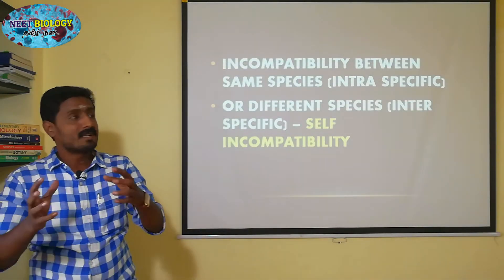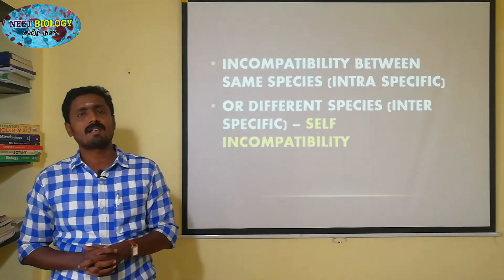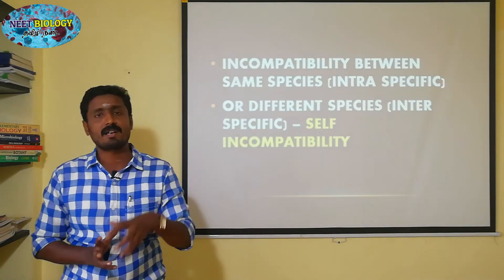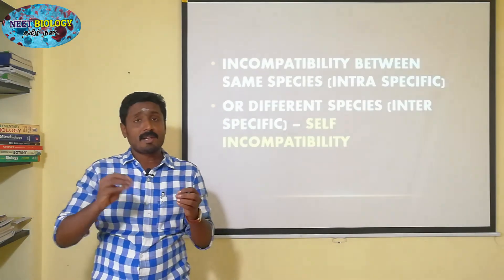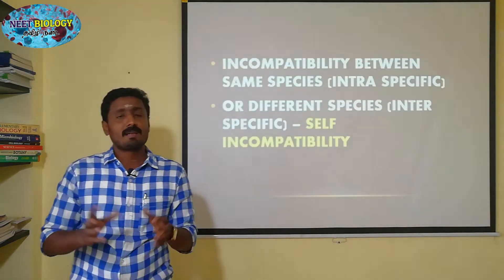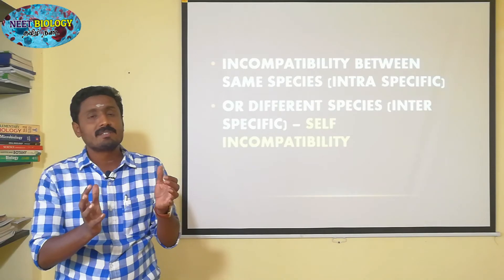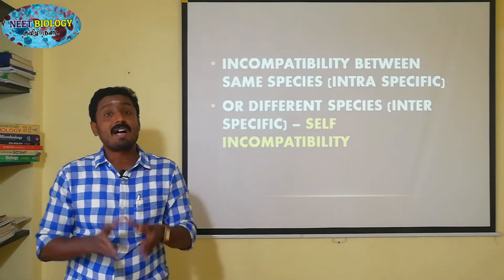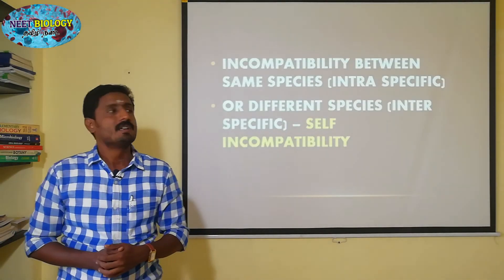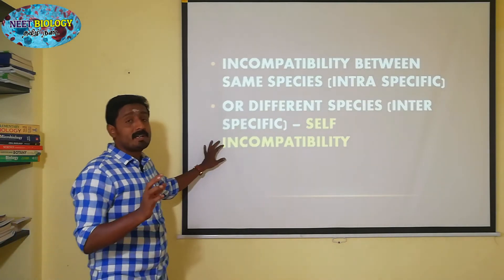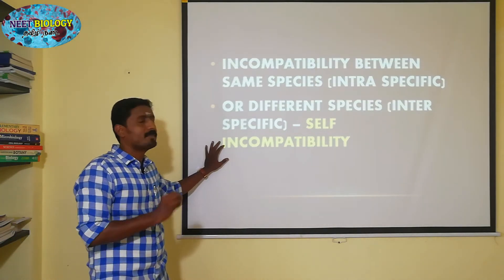For example, in a Nicotiana plant, there is self-incompatibility. There is a specific type of SP associated with this, and this plant is a classic example in terms of self-incompatibility.